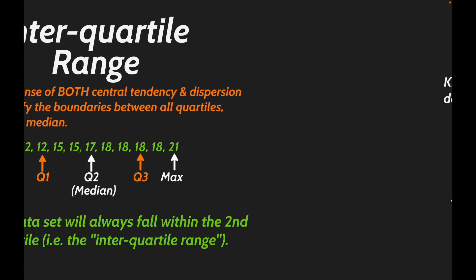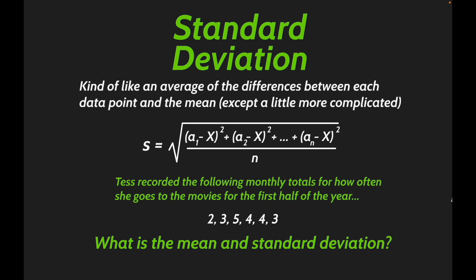Another way to express dispersion that pairs well with the mean is standard deviation. At the risk of oversimplifying, think of it as something like an average of the differences between each data point and the mean. The formula is more complex: it squares the difference between each data point and the mean, sums those squared differences, divides by the number of data points, and takes the square root of that result.